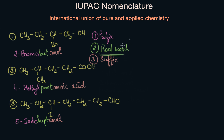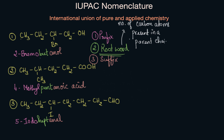What is the root word? The root word refers to the total number of carbon atoms present in a parent chain. For the root word, we need to keep two things in mind: it depends on the carbon atoms, and it depends on the parent chain. So whenever we hear the term root word, we have to count the total number of carbon atoms present. The parent chain means the longest carbon chain present in the compound.